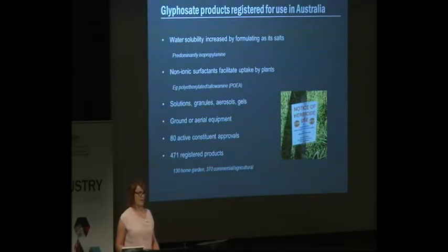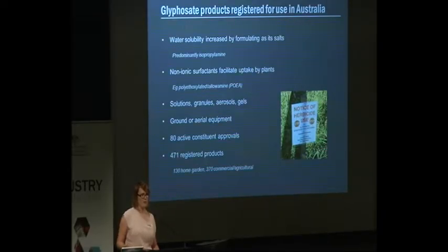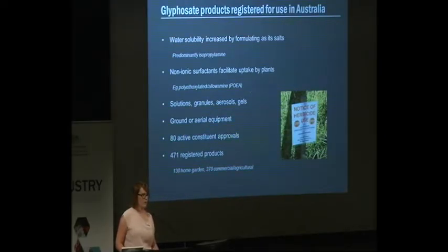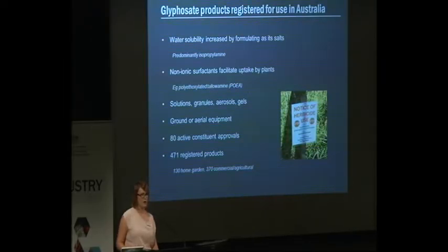They're formulated as various different products — solutions, granules, aerosols and gels — and they can be applied by either ground applications such as ground booms, knapsacks and hand sprays, as well as aerial equipment. When I put this slide together we had about 80 active constituent approvals and about 471 registered products, split between home garden products, products registered for commercial or agricultural uses, and some products registered for a combination of those uses.